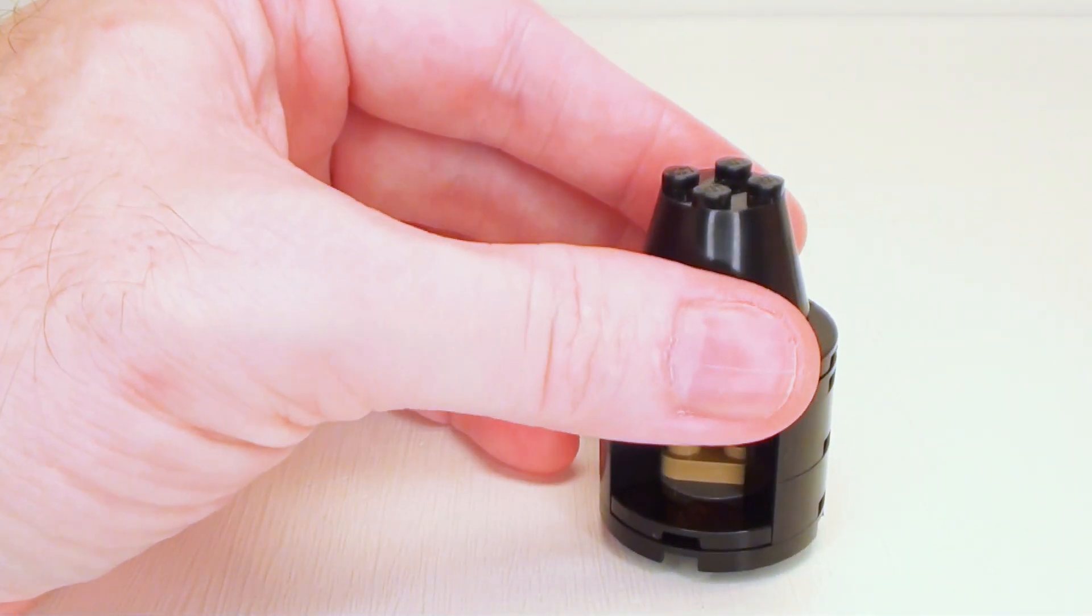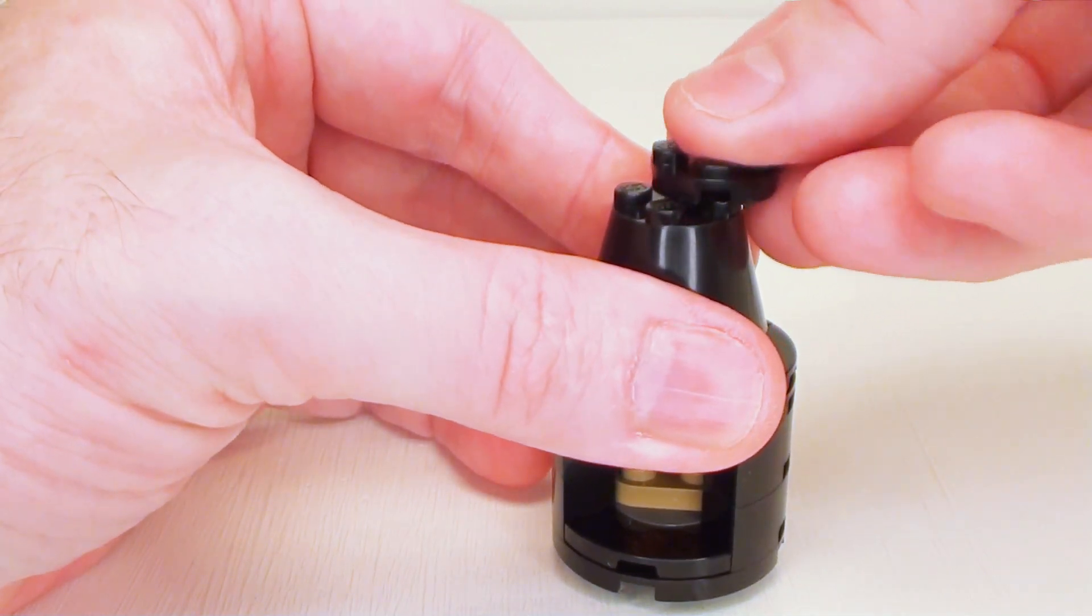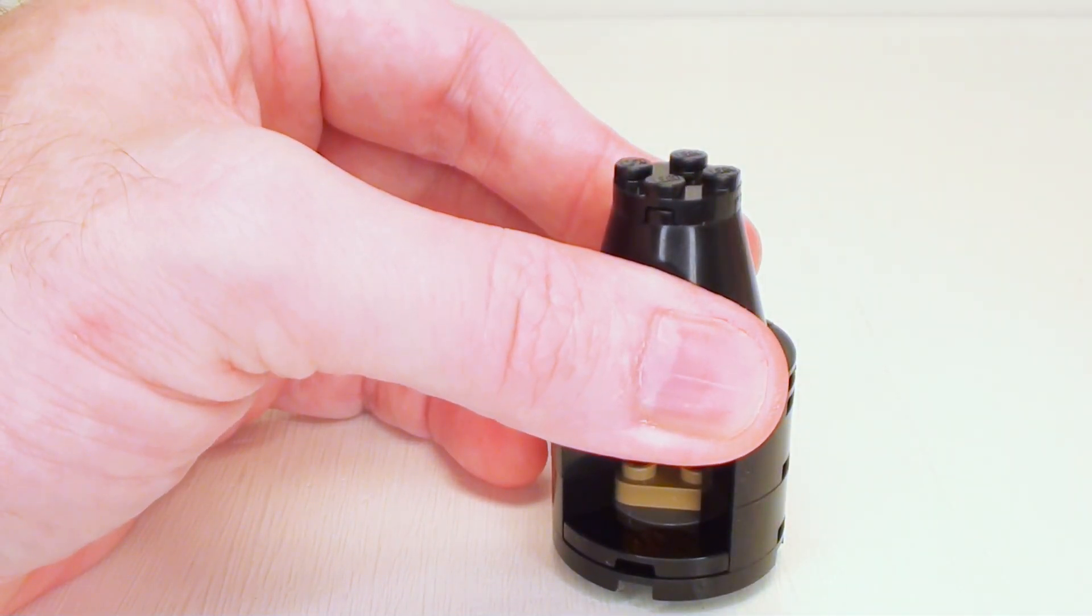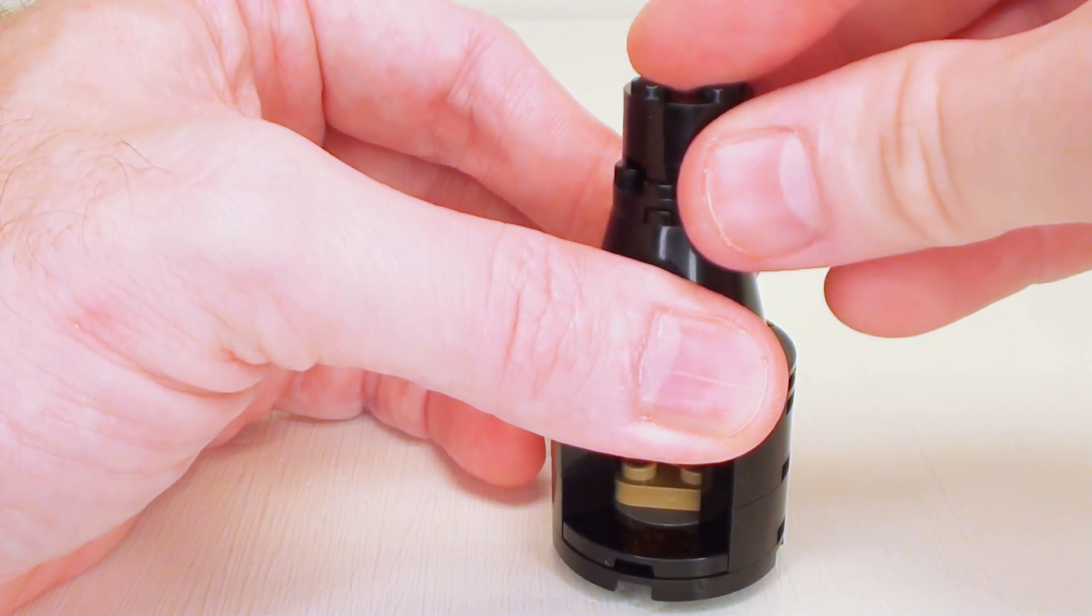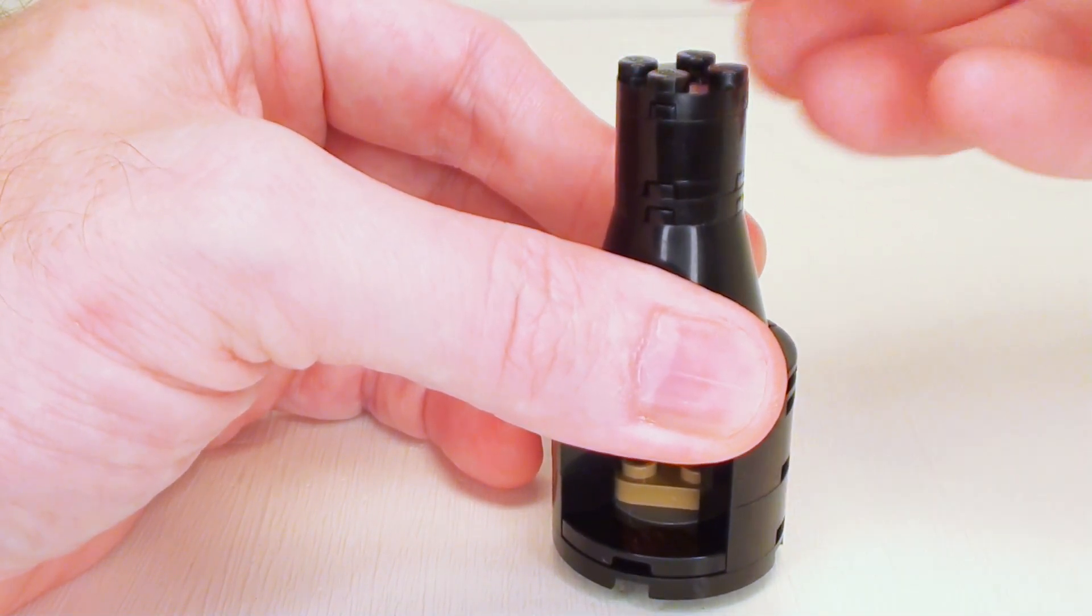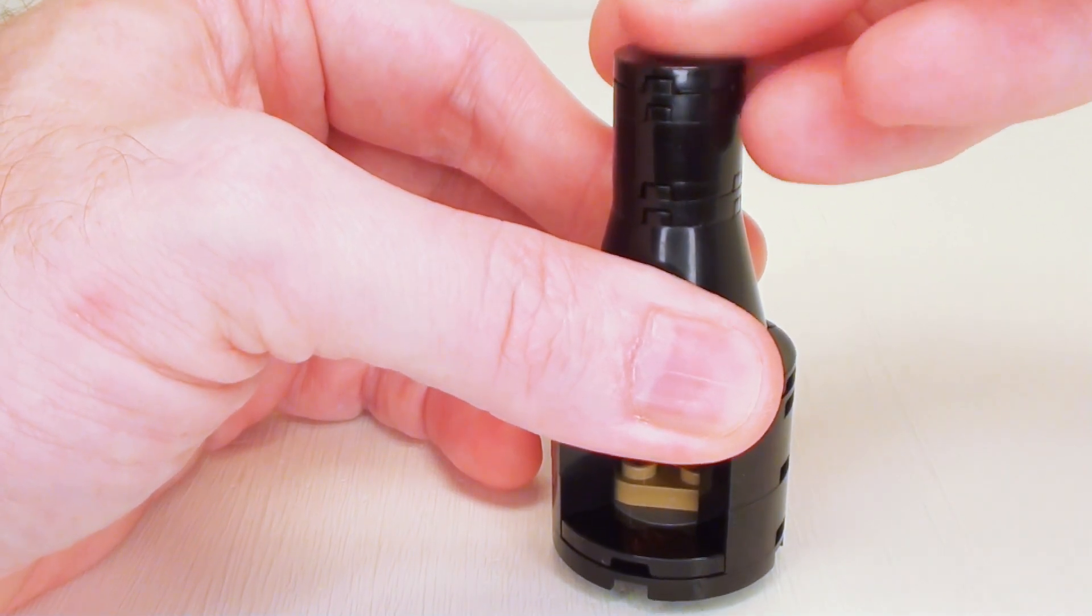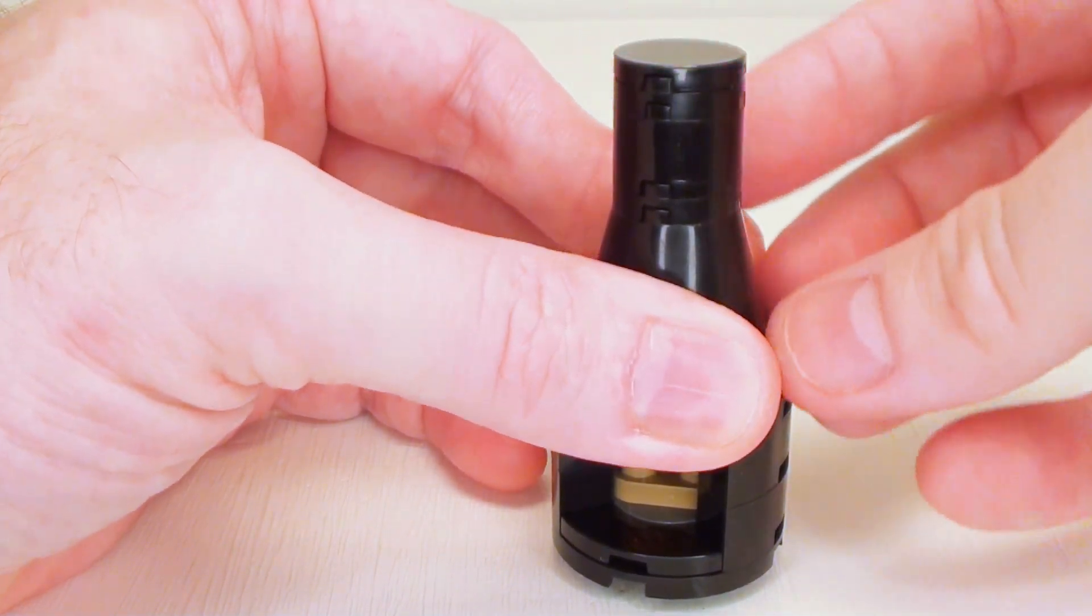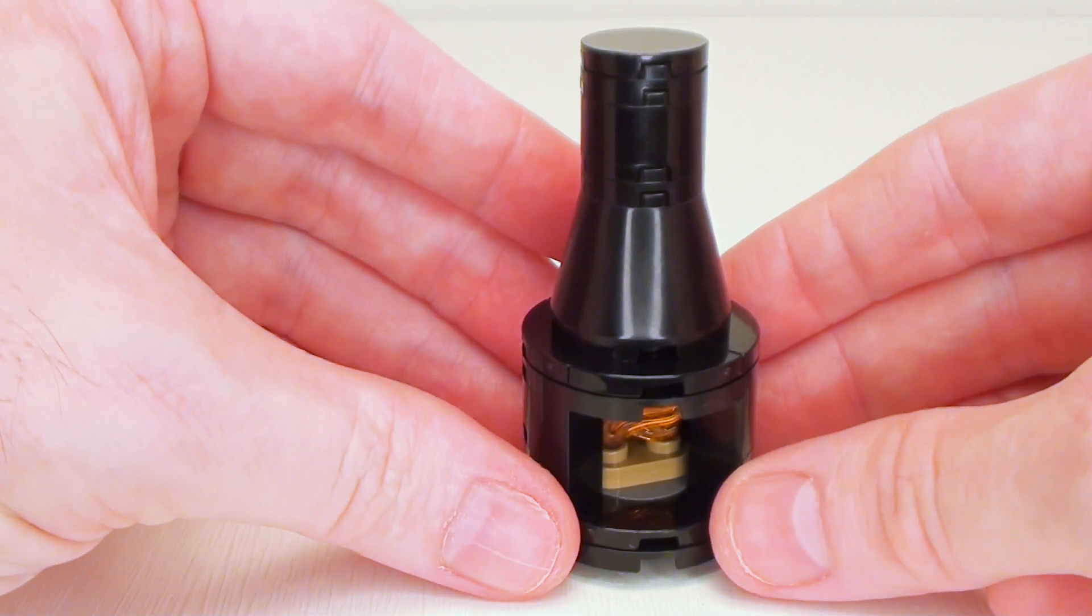And we're going to flip that right side up. And we're going to proceed on with the little smokestack or chimney with a 2 by 2 round plate and a 2 by 2 brick, 2 by 2 round plate, and a 2 by 2 flat tile to complete the wood-burning stove.